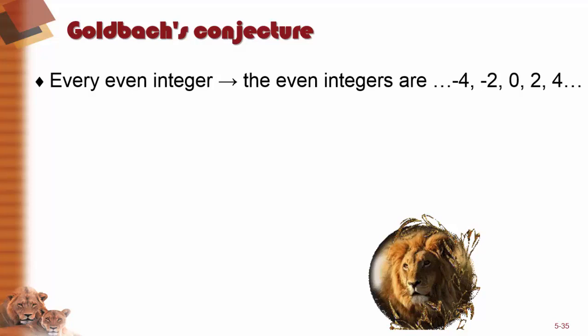Goldbach's Conjecture. Every even integer. Well, what is an integer? We know that 2, 4, 6, 8, 10, 12, etc. are even numbers, but there are also negative even numbers such as negative 2, negative 4, negative 6, negative 8, etc. And these are all integers including 0.